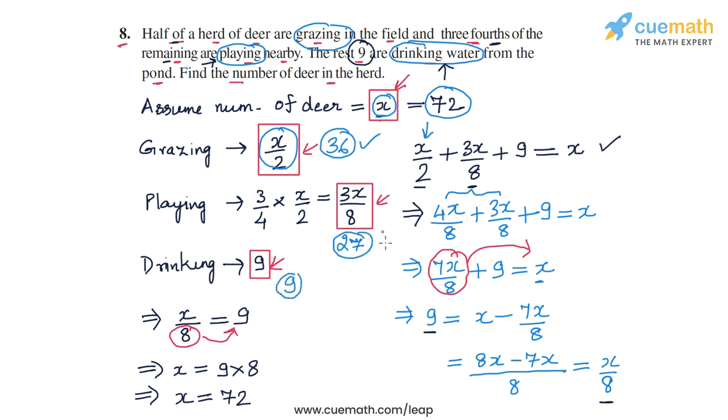So if you take 36, 27, and 9 and put them together, we get 72 again. So the answer 72 is correct. The number of deer in the herd is 72.